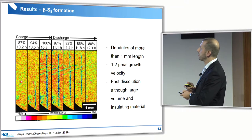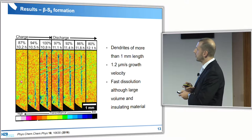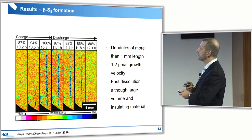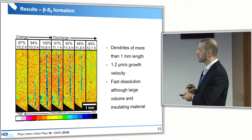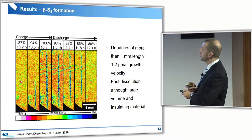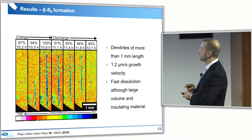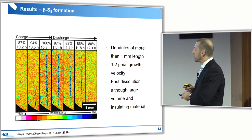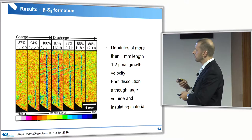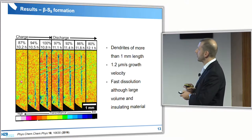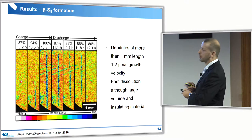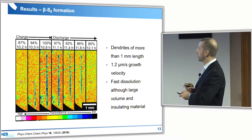There is low transmittance when you form the dendrite, and in the vicinity of the dendrites you see a depletion of sulfur species. When it dissolves, you get more sulfur around the dendrites again. This is quite a fast dissolution — although the volume is large and the material is insulating, it works very fast. These dendrites can grow at a velocity of 1.2 micrometers per second, shooting across the electrode.